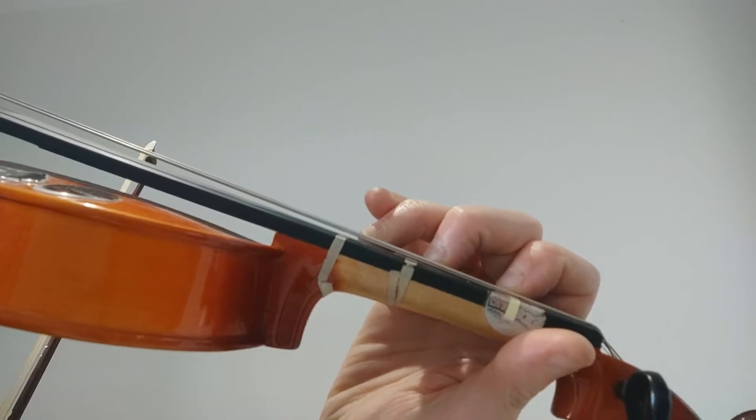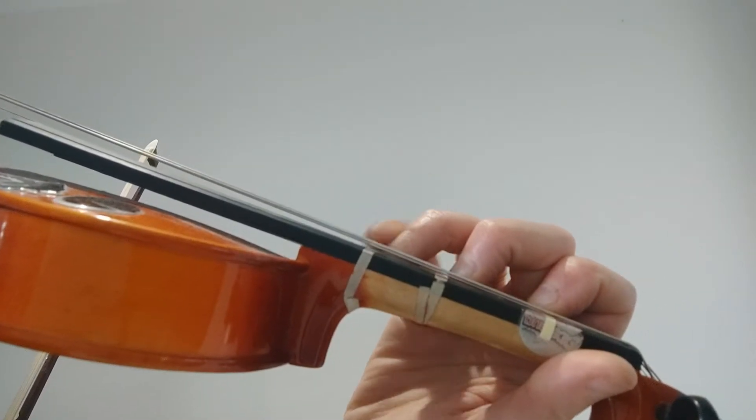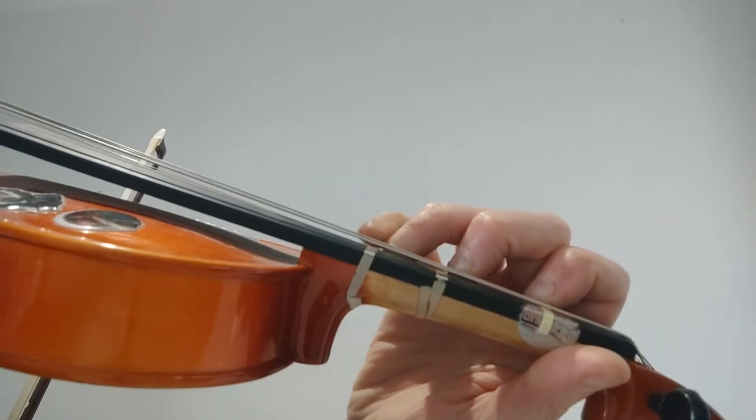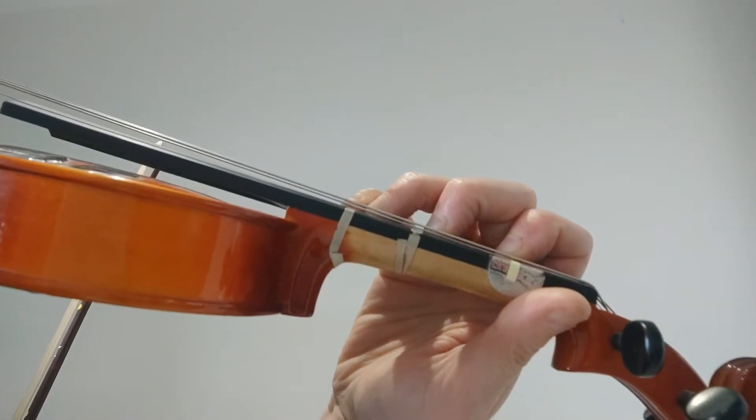After the A sharp in bar 8, we've got a B natural and that will go on top of A sharp, so it's a semitone away.